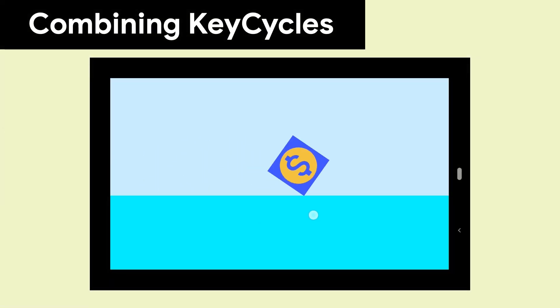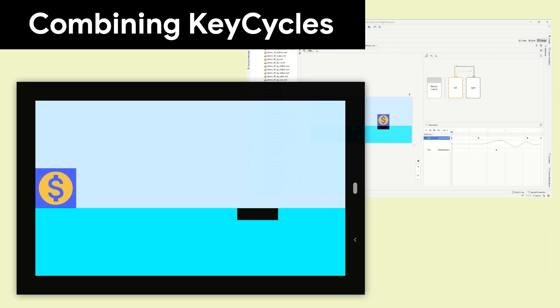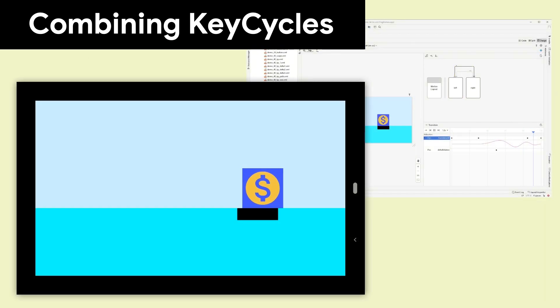On a real device, we can see the animation can be very precise. In this example, we simulate a spring bounce. It required four KeyCycles to smoothly transition, and you can see it in the Motion Editor behind.